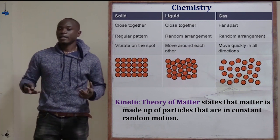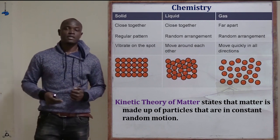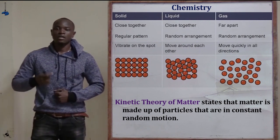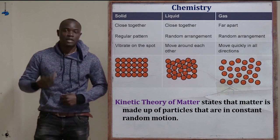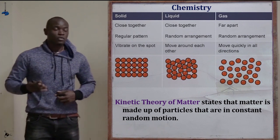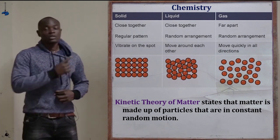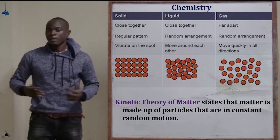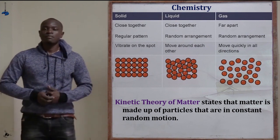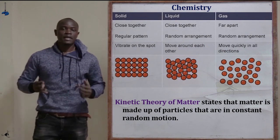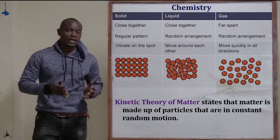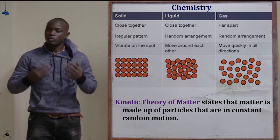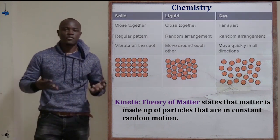This formed the basic principle of the kinetic theory of matter. In the kinetic theory of matter, we saw that matter is made up of tiny particles that are in constant random motion. So in chemistry, we essentially measure facts about the different states of matter, looking at them from different angles.